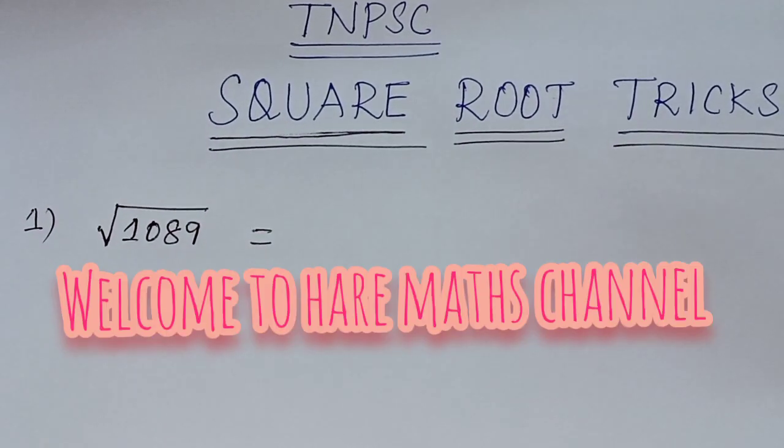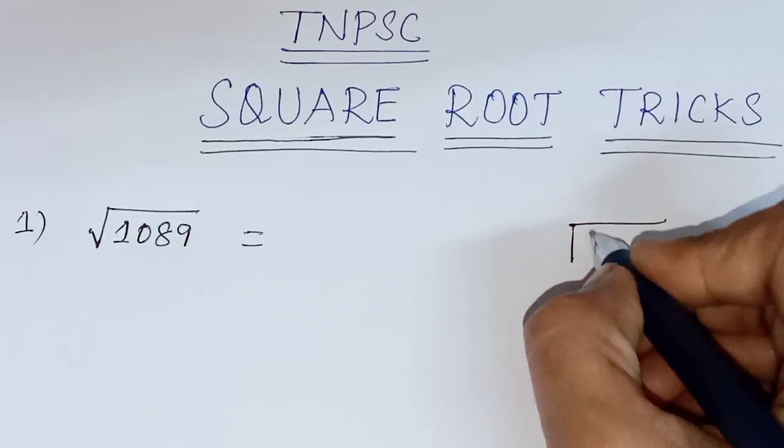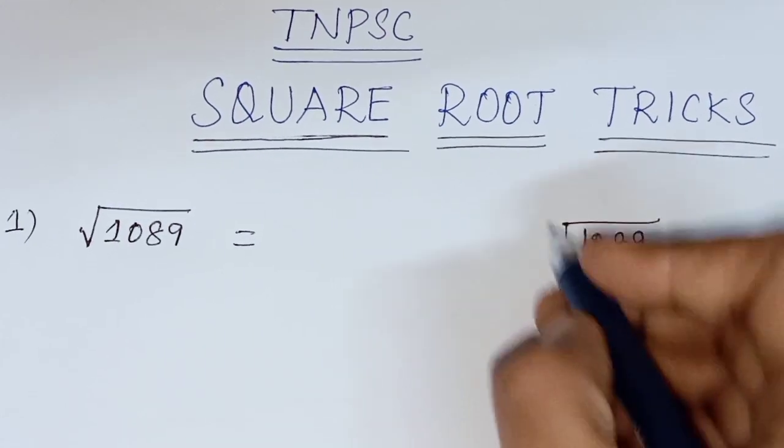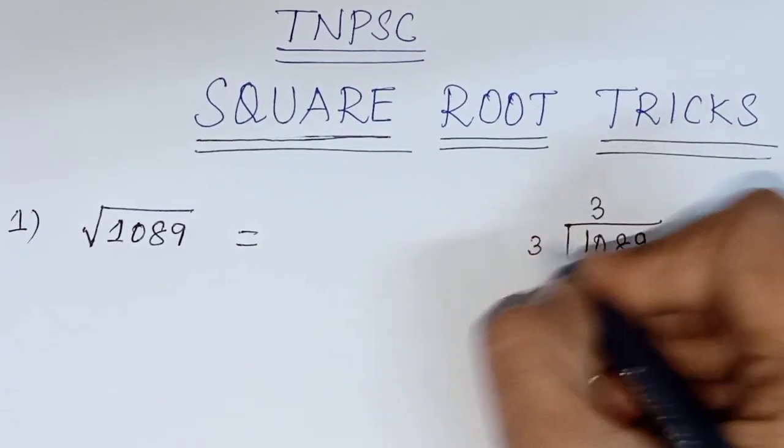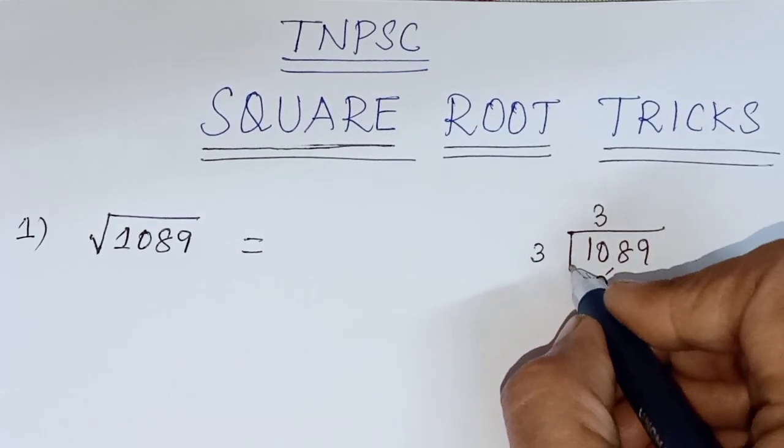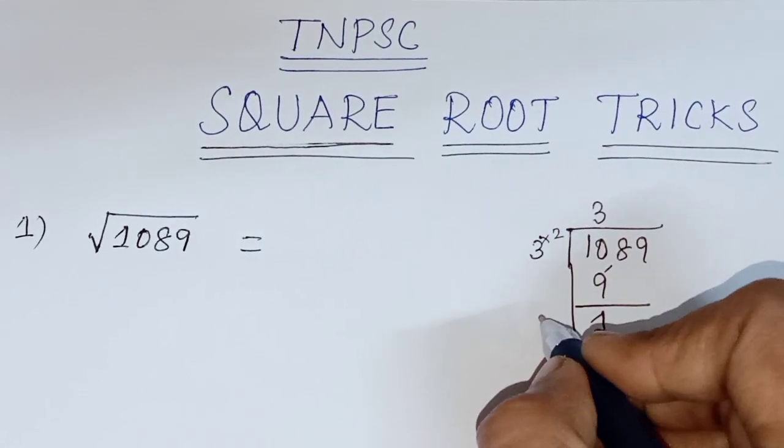First sum, square root of 1089. So shortcut, 1089. So 2 digits at the time. 3, 3 sir, 9. 10 minus 9, 1. So 3 is multiple, 2 are multiple, 3 into 2, 6.